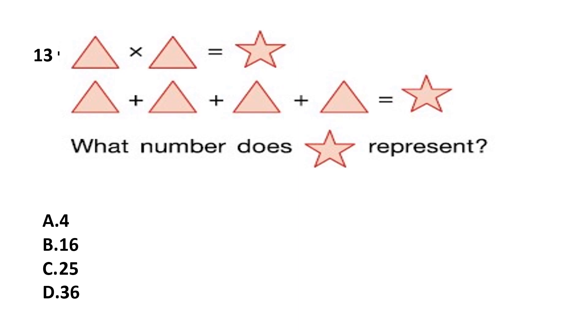Question number 13. Triangle multiplied by triangle equals star. And triangle plus triangle plus triangle plus triangle equals star. What does star represent? This type of question, we will solve by options. Let's assume from option A, star is 4. If in this equation star is 4, then this triangle is 2. Because 2 multiplied by 2 is 4.